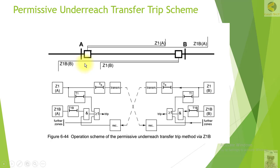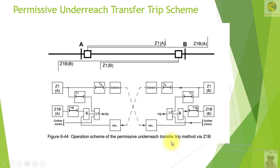As soon as the relay at Station A receives the permissive signal, it will check whether the fault is also in the forward direction Z1B. If Z1B is picked up, then this relay will also trip immediately at Station A. In this way, the relay at Station A will not wait for Zone 2 time, which is 300 to 400 milliseconds, but will trip immediately.